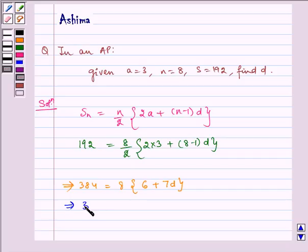Which implies 384 is equal to 48 plus 56d.